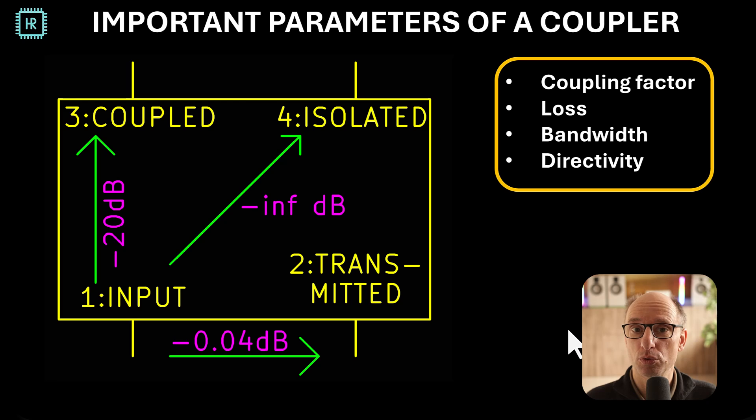Now let's see what all the important parameters of a coupler are. We have the coupling factor, we discussed that already. That's from input to the coupled port. We have the loss, that's basically from the input to the transmitted port. Then we have the bandwidth, we didn't discuss that yet. But generally these things are resonance structures. So the simple one we're making is roughly working from one to two gigahertz.